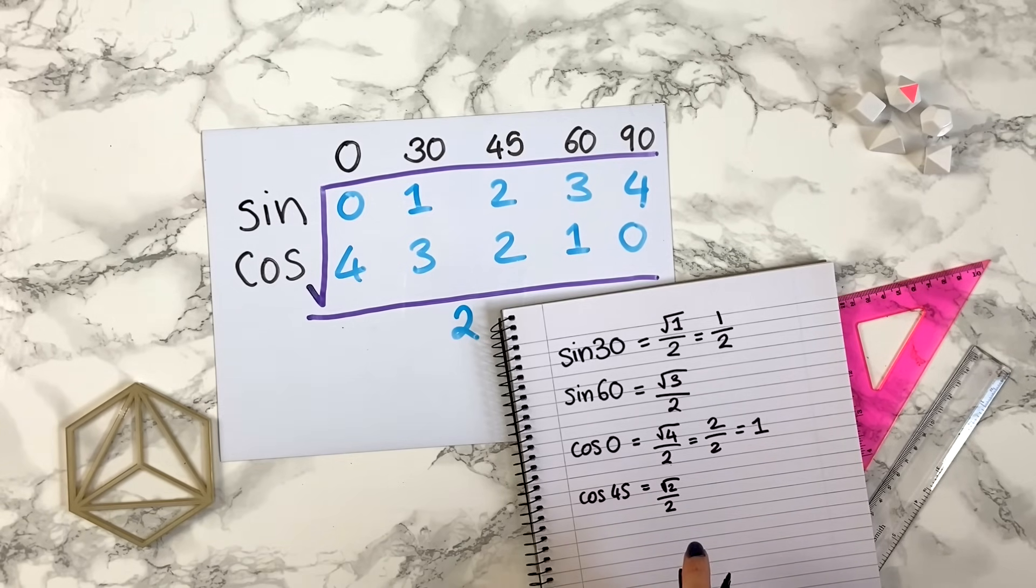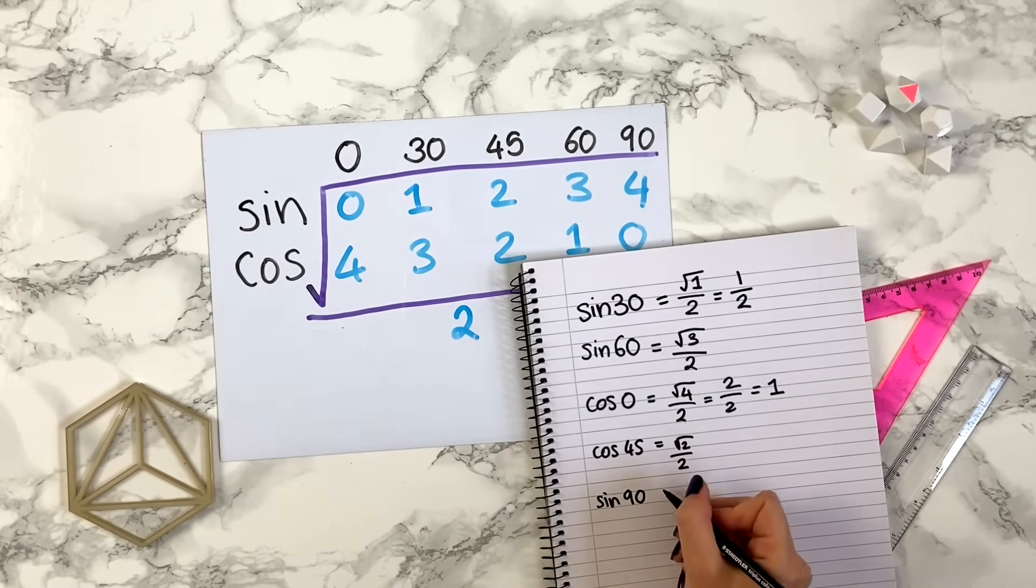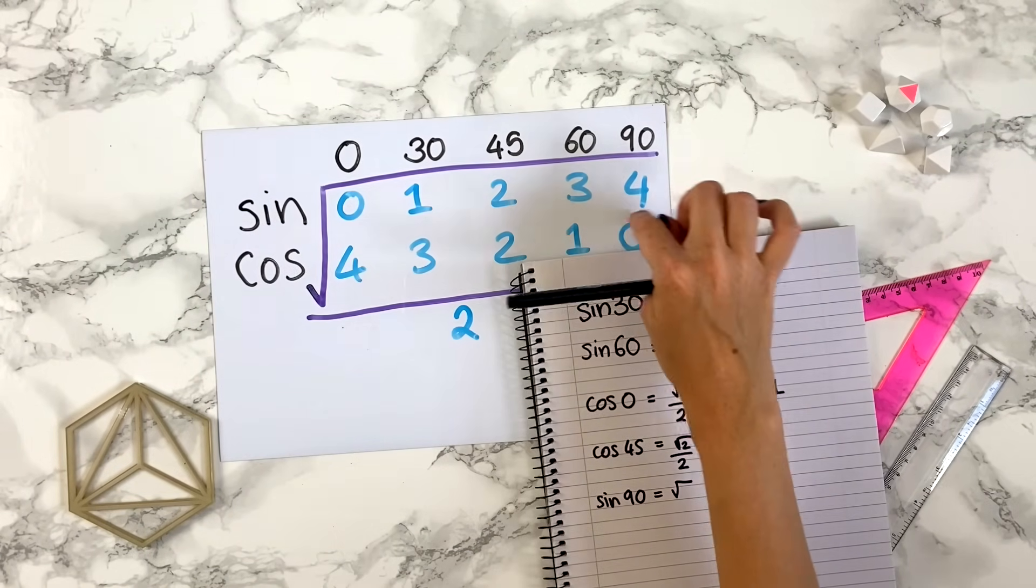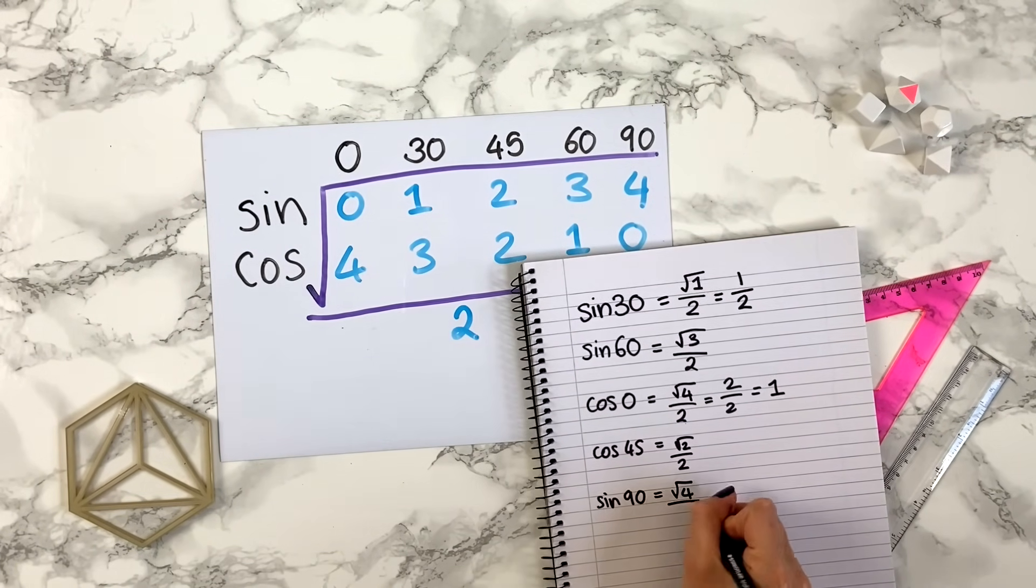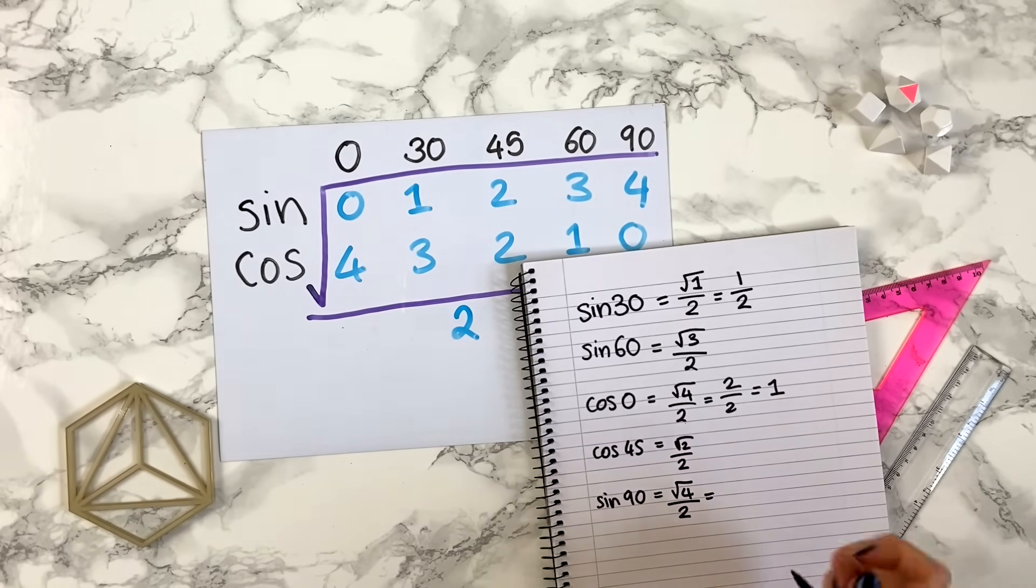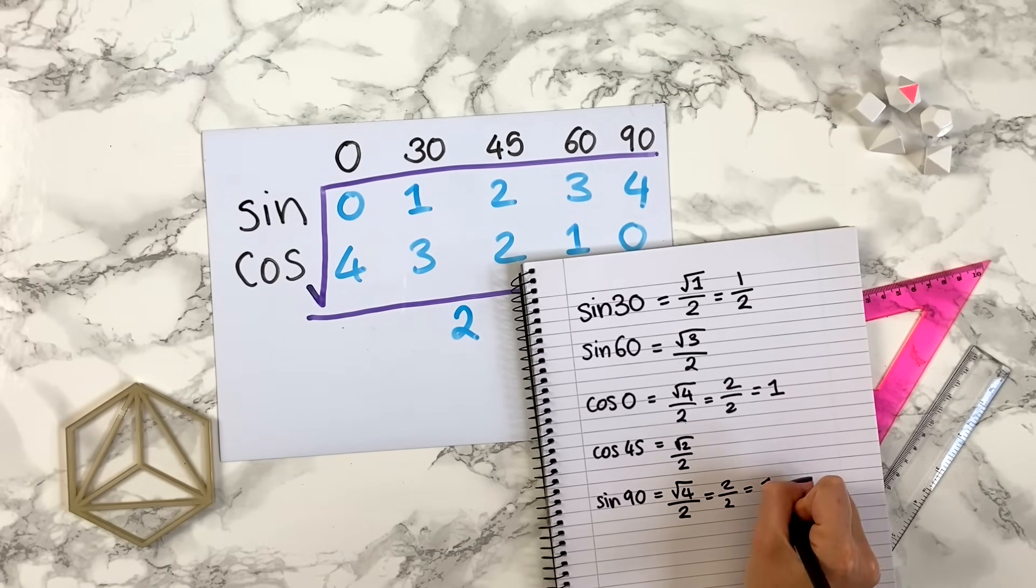Let's try a final one here. Sine of 90, let's say. So hopefully you get what you do now. You take this big square root. Sine of 90 corresponds to that 4 divided by 2. We have a similar situation up here, so the square root of 4 is 2 divided by 2, and that is just 1.